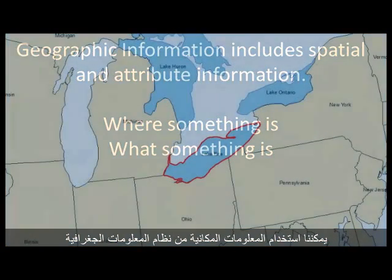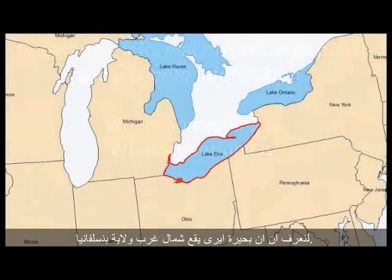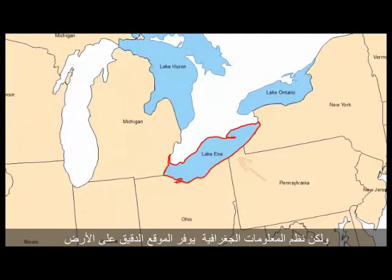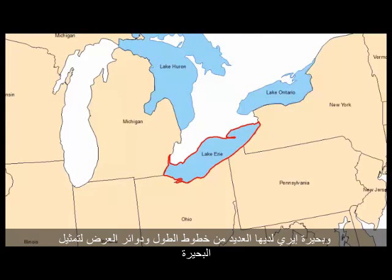We can use spatial information from a GIS to see that Lake Erie is located northwest of Pennsylvania, east of Michigan, and north of Ohio. This is the relative location of Lake Erie. A GIS also provides the precise location on the earth using the latitude and longitude. Lake Erie has many latitude and longitude points to create the rim of the lake.